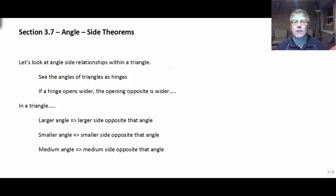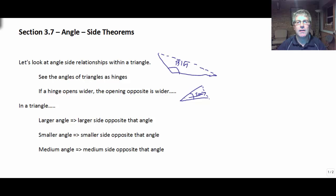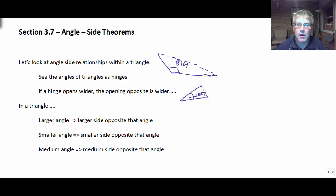One thing we've done earlier this semester is we viewed the angles of a triangle as a hinge. The wider an angle opens, if we have a big angle, we need a really long side opposite that to accept that wider angle. If we have a small acute angle, we don't need as big of a side across from that particular angle. So we look at angles as a hinge: the wider the angle, the longer the side we need.